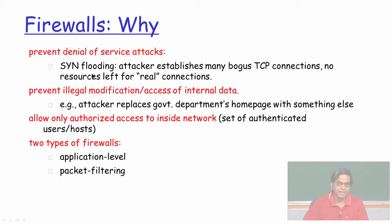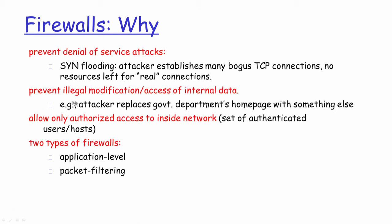The second thing the firewall device is expected to do is prevent illegal modifications or access of internal data. For example, in a business organization, you do not want a competitor to get access to customer data, or if the internal network is a government department's network, you do not want an unauthorized person from the outside internet to access all the confidential data available on the intranet.